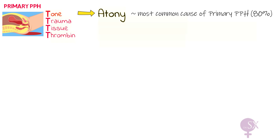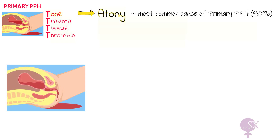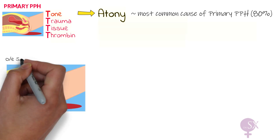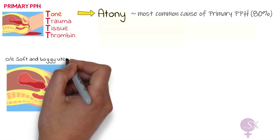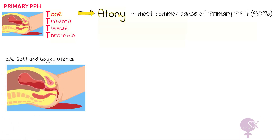If the myometrium does not contract sufficiently, the placental arteries continue to bleed, resulting in excessive bleeding and PPH. The uterus will feel soft and boggy in these cases. There are some predisposing risk factors which result in uterine atony.